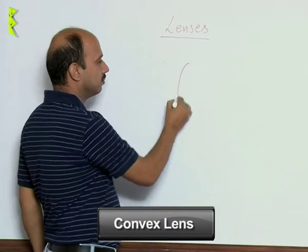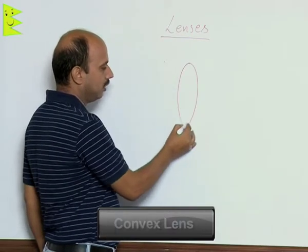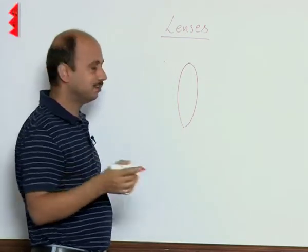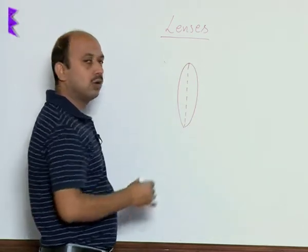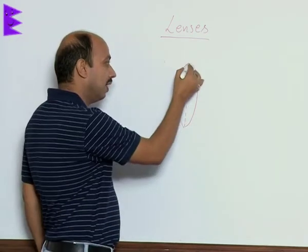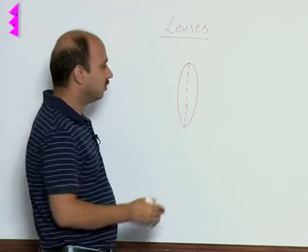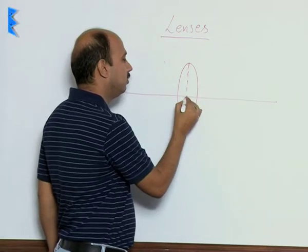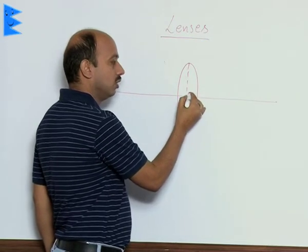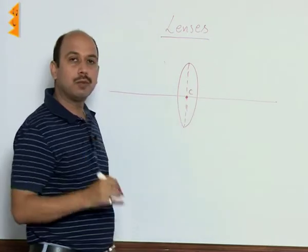In convex lens, I have taken two spherical surfaces having the same radii. We will draw a line dividing these two spherical surfaces. This point C is known as the optical center.